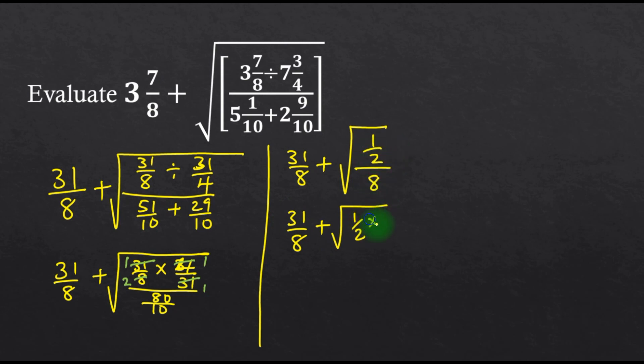We end up getting 31 over 8 plus the square root of 1 over 16. This can also be written as 31 over 8 plus the square root of 1 all over the square root of 16.